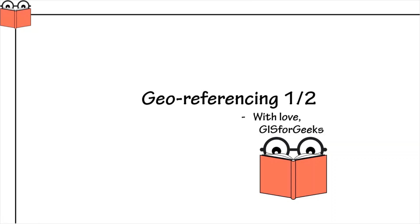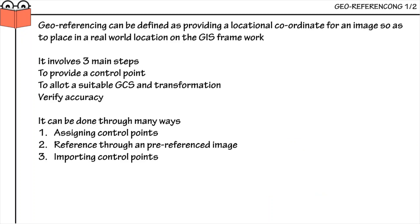Hi all, we are back. This week's topic is georeferencing. We will be looking at this video in two parts. In the first part we look at what is georeferencing and we will see one type. In the second part we will be looking at a few more types. Georeferencing can be defined as providing a locational coordinate for an image so as to place it in a real-world location on the GIS framework.